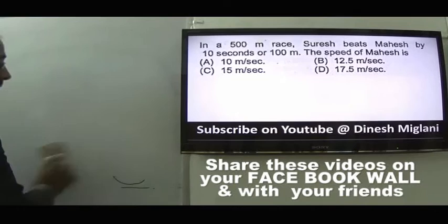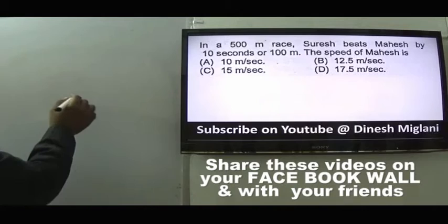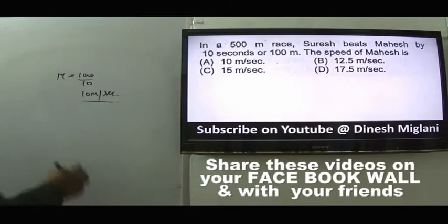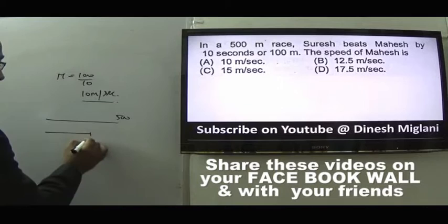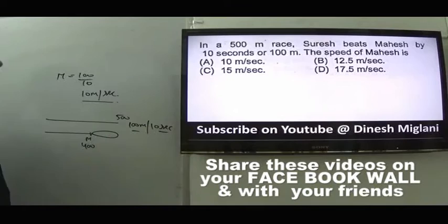Question 6: In a race of 500 meters, Suresh beats Mahesh by 10 seconds or 100 meters. Speed of Mahesh = 100/10 = 10 meters per second. Understanding the concept: Suresh traveled 500 m, Mahesh traveled 400 m. Mahesh can travel 100 meters in 10 seconds, so speed = 10 m/s. Answer is A.